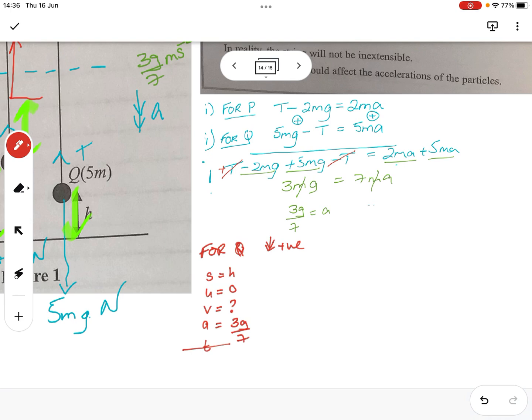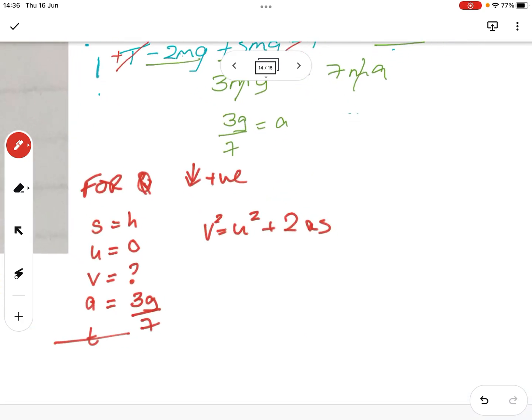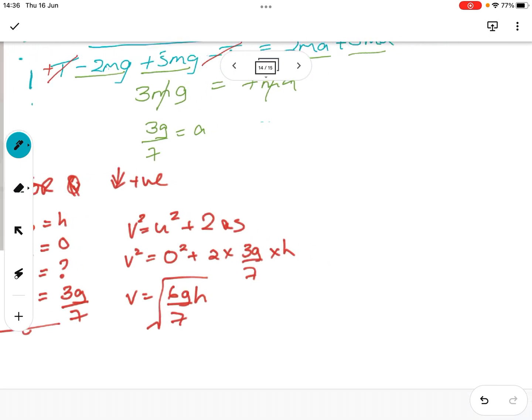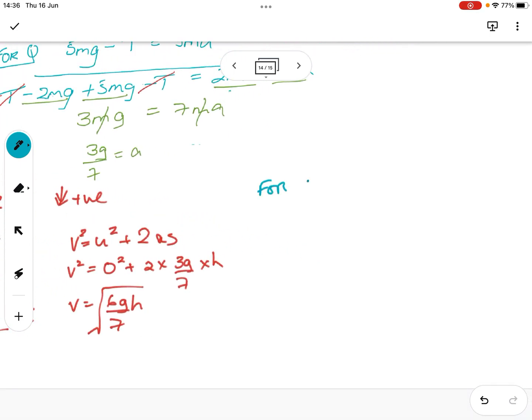The final velocity is what we want to find, and the acceleration we know was 3G over 7. We're not interested in the time. Where's my book's gone? So, the one with that T is V squared equals U squared plus 2AS. Okay. V squared equals 0 squared plus 2 times 3G over 7 times H. So, V is 6G over 7 H all square rooted, because it's just this square rooted. That is my final velocity for Q, which means it must be, for P, that is going to be my initial velocity.